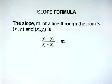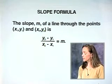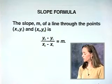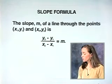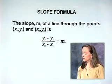Let's move on to another concept involving lines, the slope. The slope is the numerical measure of the steepness of the line. In other words, its rise over its run. Here's the definition. The slope represented by the letter m of a line through the points x1, y1, and x2, y2 is y2 minus y1 over x2 minus x1.